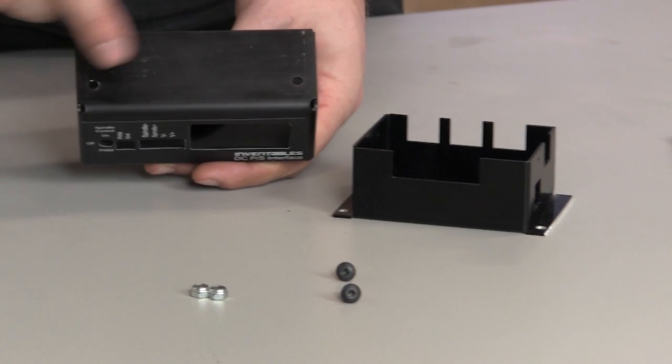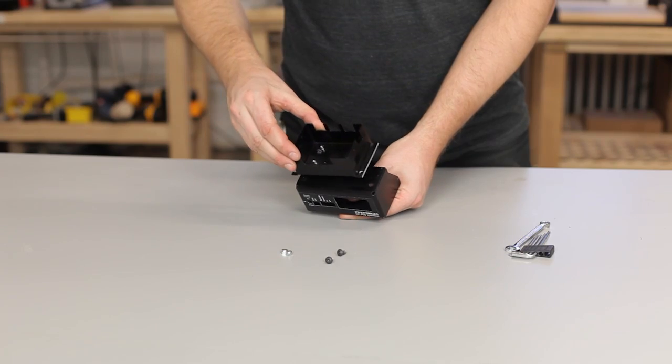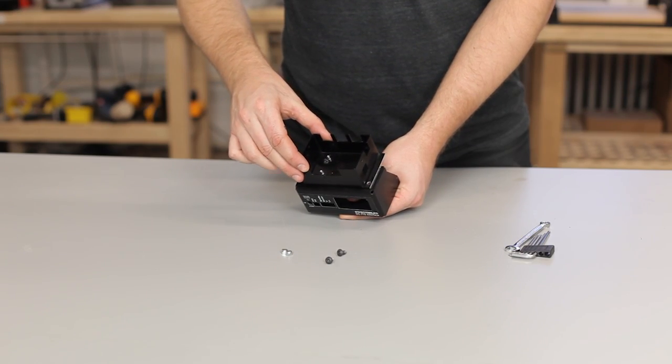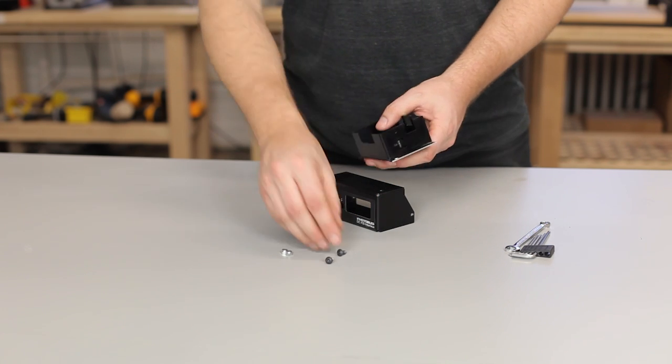Now we're going to attach the G-Shield enclosure to the power supply interface. Use two button head cap screws and two hex nuts to do this.